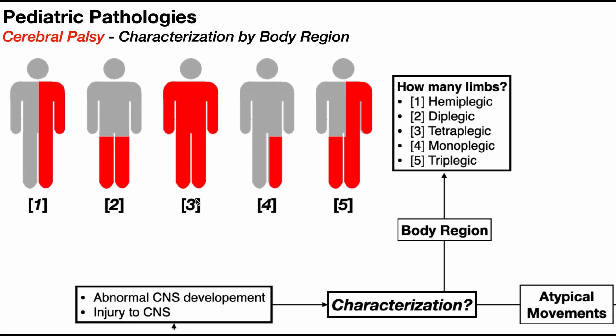The most severe type is tetraplegic CP — sometimes called quadriplegic CP — where all four limbs are affected along with the trunk. Both arms and both legs are involved.